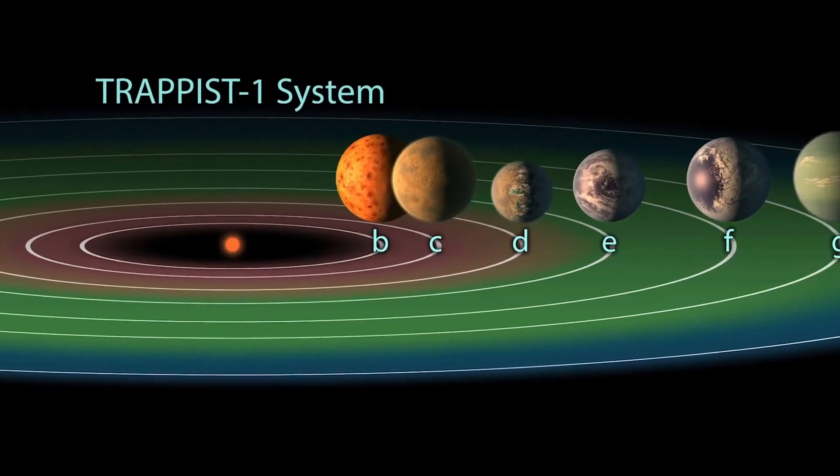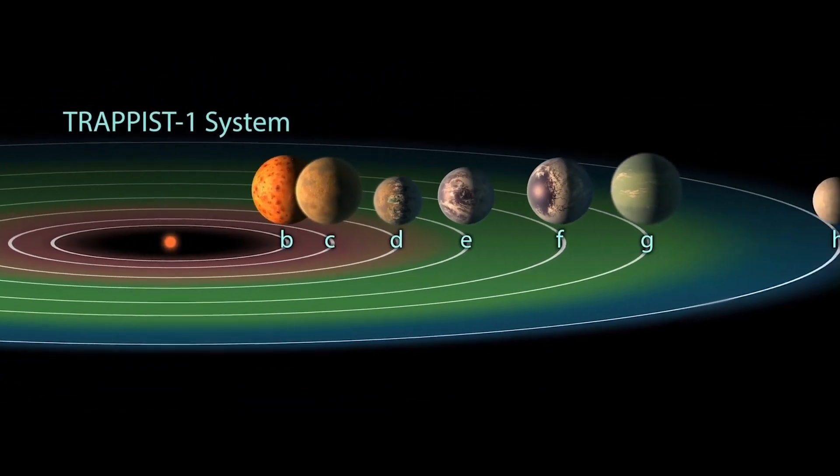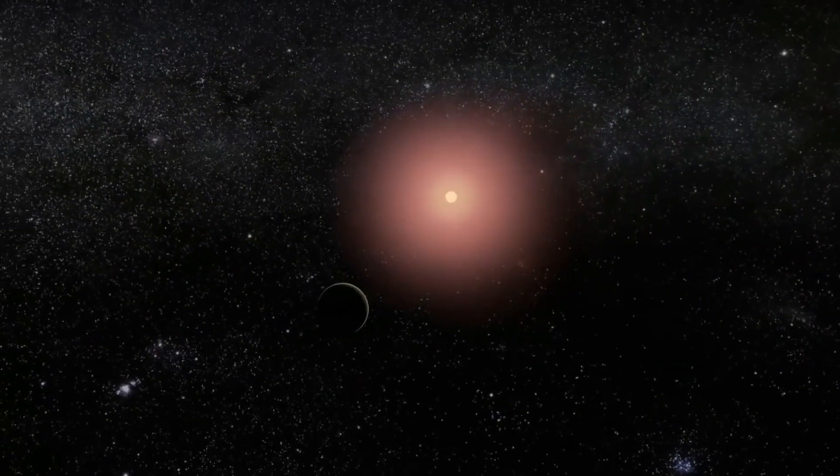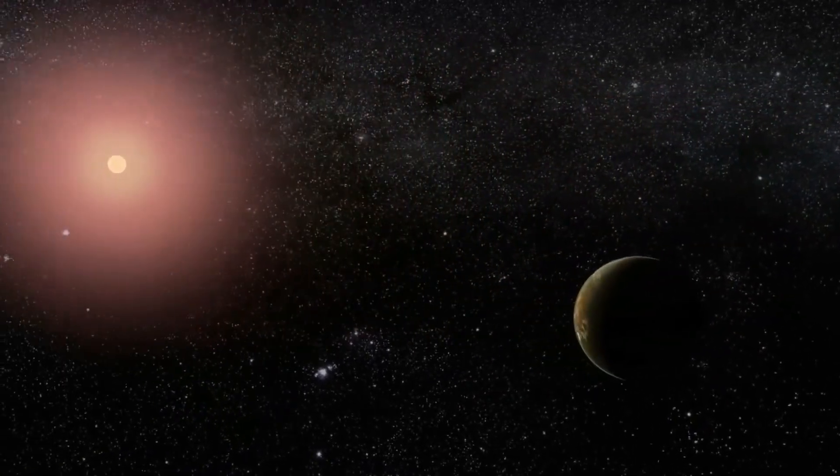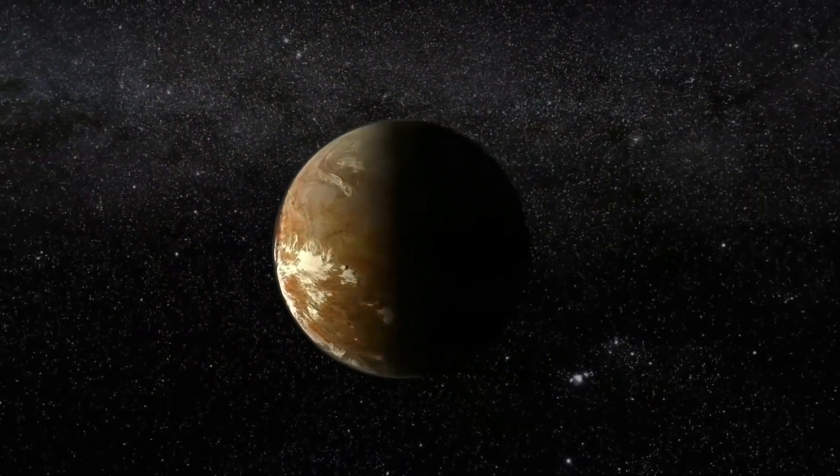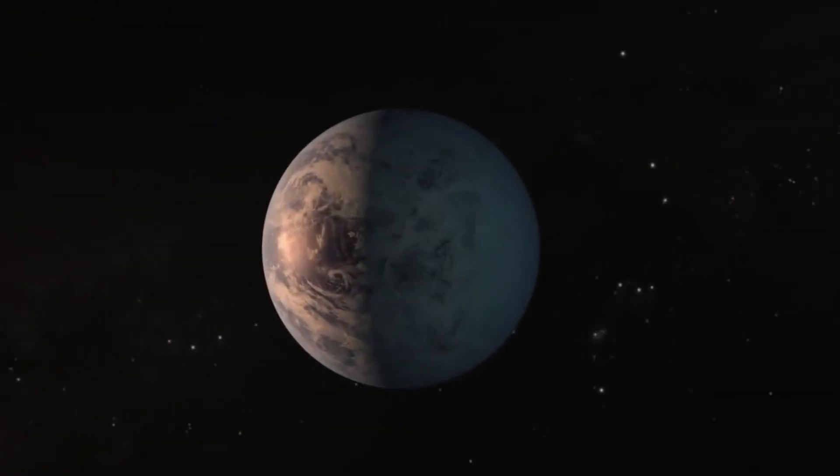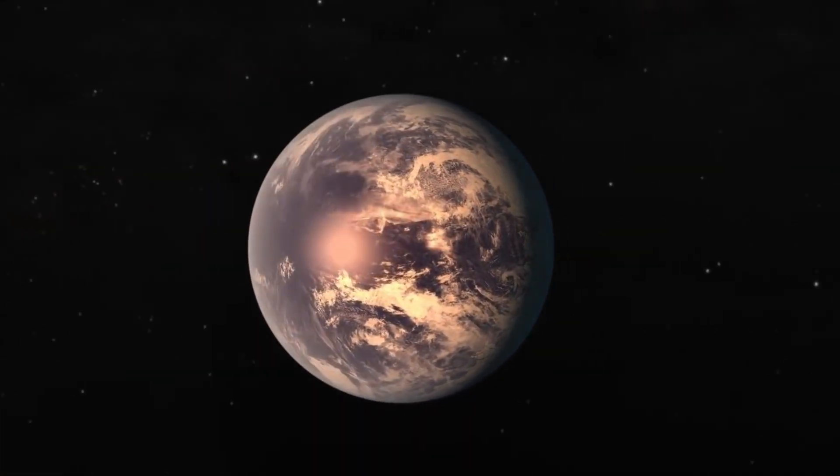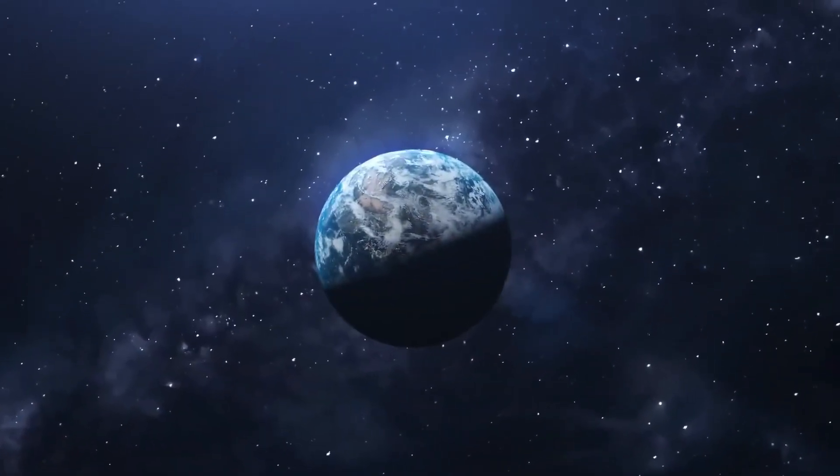One of the most interesting things about these planets is that they're about the same size and mass as the rocky planets near the center of our own solar system. Even though they all orbit their tiny star much closer than any of our planets orbit the sun, all of them could fit comfortably within Mercury's orbit and get about the same amount of energy from it.